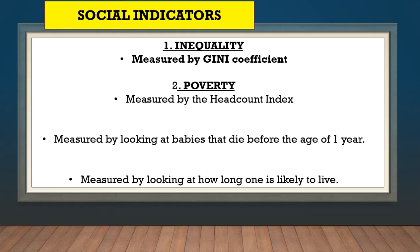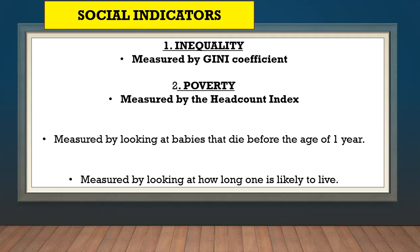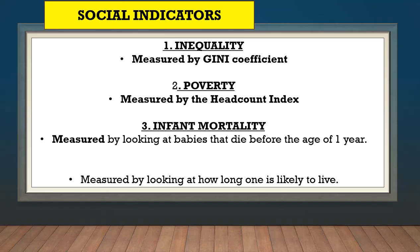The second social indicator is poverty — how poor people are. This is measured by the headcount index. A headcount of people living below the poverty line is done to see how many people live below the poverty line, and that's how poverty is measured. There's also infant mortality — an infant is a baby that hasn't reached the age of one, and mortality means death. So infant mortality is measured by looking at babies that die before the age of one year.